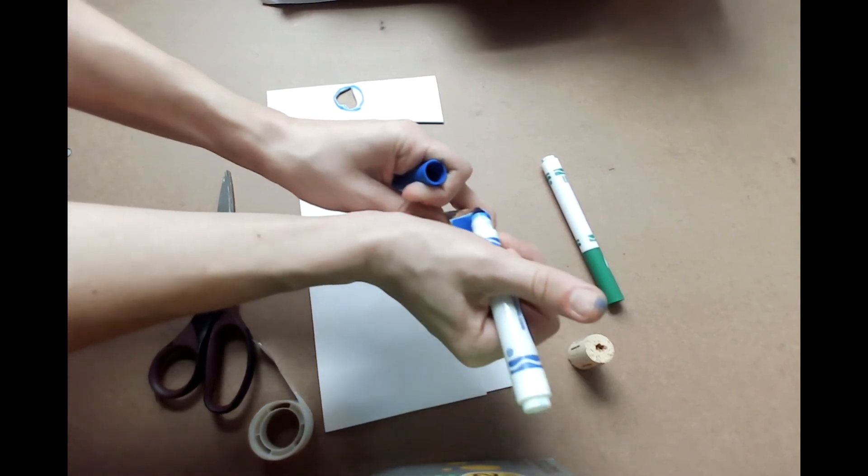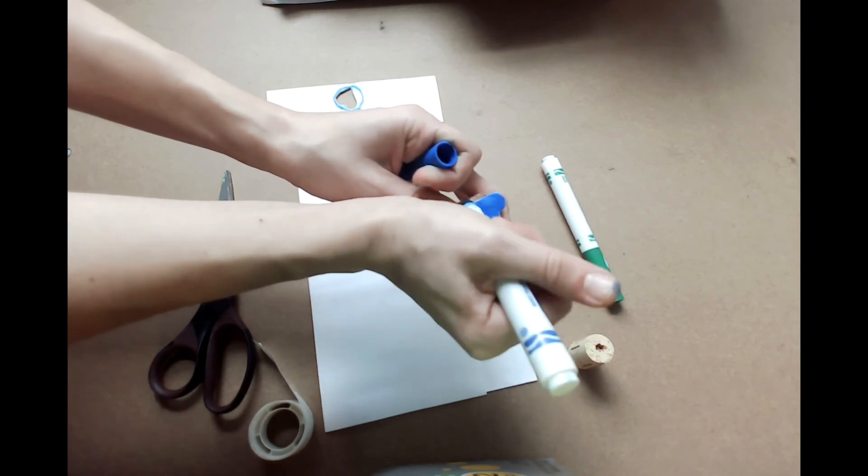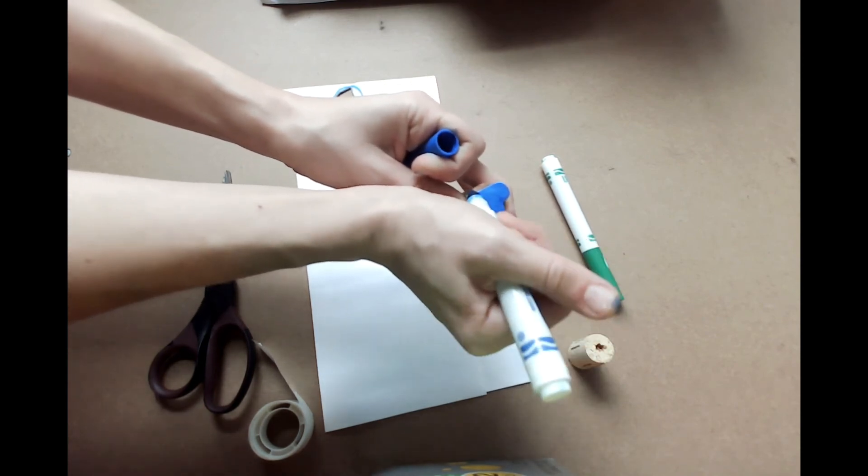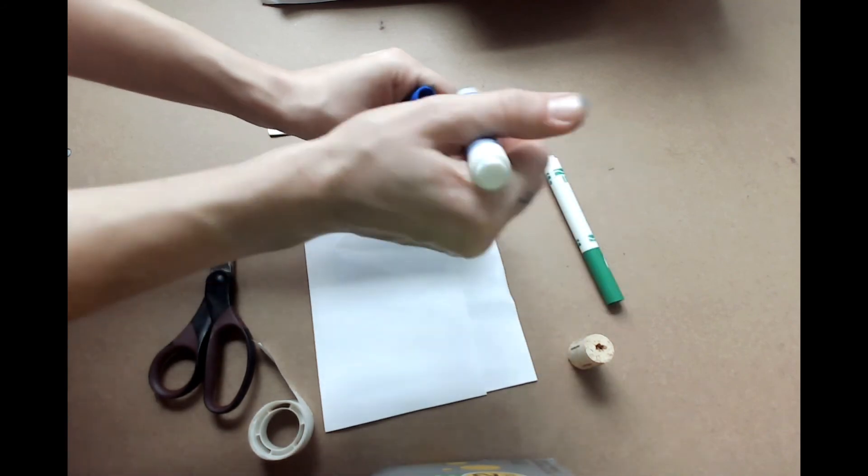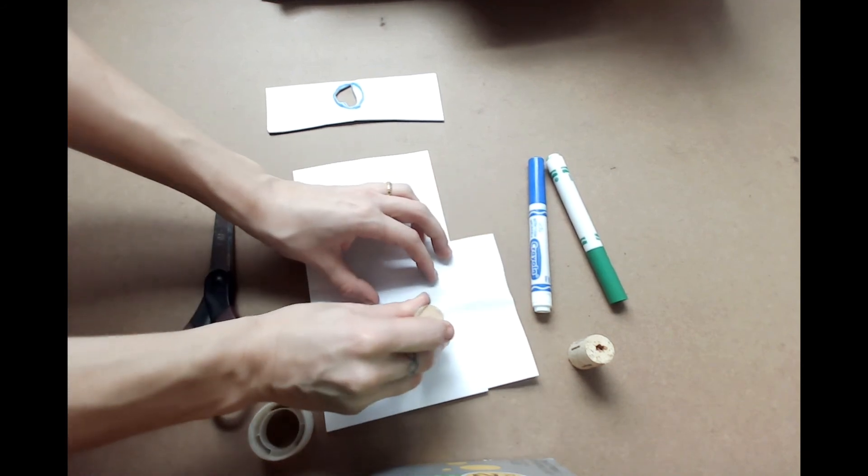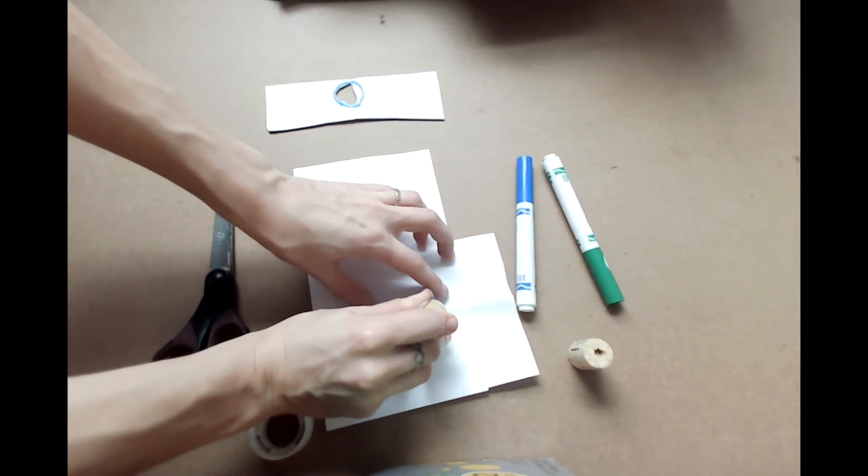You want to make sure you add lots and lots of marker to the top of this stamp so our shape comes out clearly on the paper. If you have an ink pad, you can go ahead and use that now. So I've colored in my heart, and now I'm going to press the foam, using the cork, into the paper.